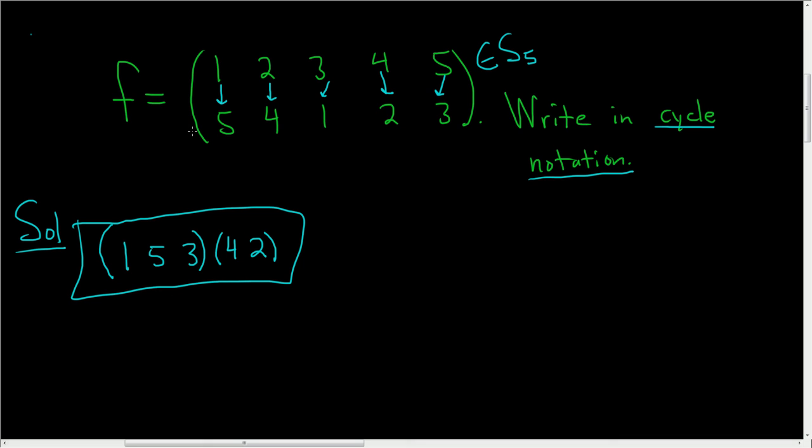That's how you convert array notation—this is called array notation or two-line notation, that's the other word used—to cycle notation.